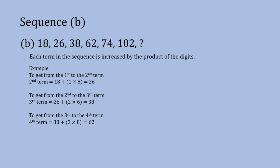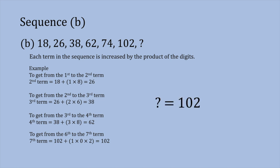The term we are trying to find is the 7th term in the sequence. We know the 6th term is 102. If we increase 102 by the product of its digits — 1 times 0 times 2 — since multiplying any number by 0 gives 0, the term 102 does not increase at all. So the 7th term is 102. In fact, all terms after the 6th will always be 102, whether it's the 10th, 100th, or 1 millionth term — you would always be increasing 102 by 0. Our final answer is 102.